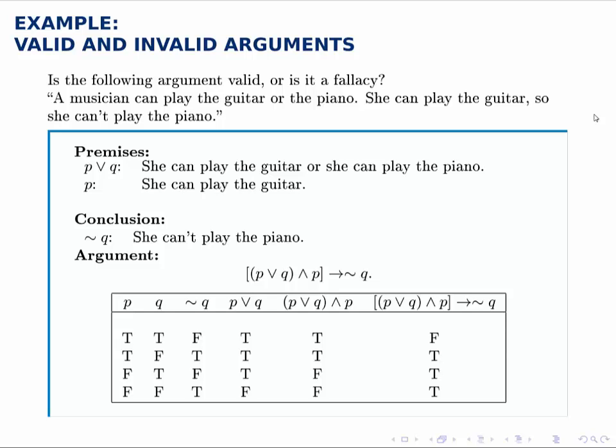Here's another example of an argument and we want to decide whether it's valid or not. A musician can play the guitar or the piano. She can play the guitar, so she can't play the piano.